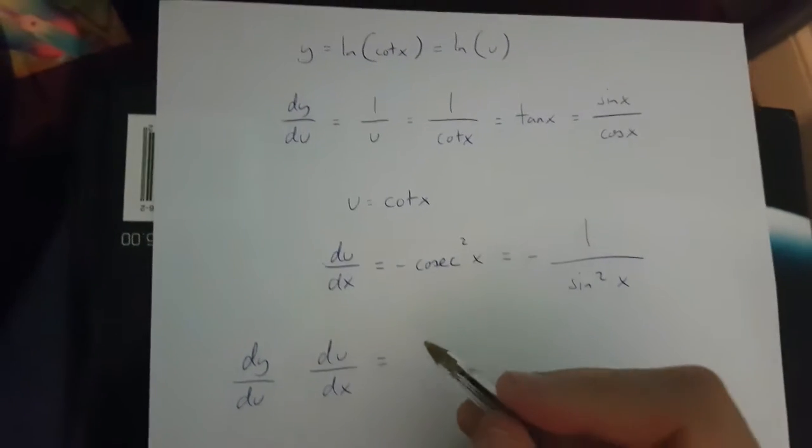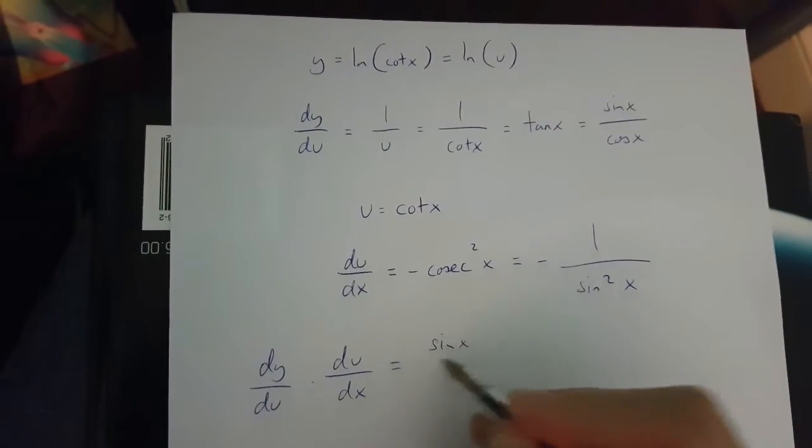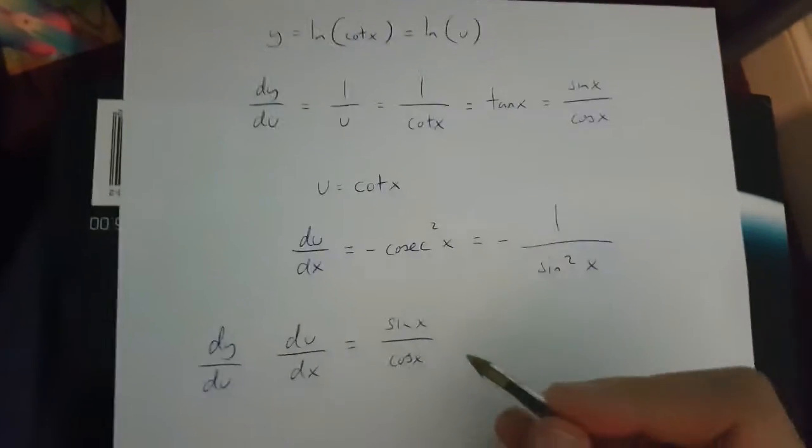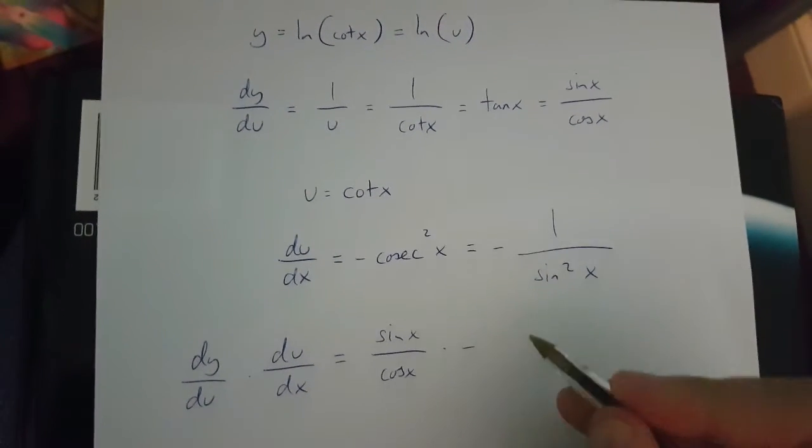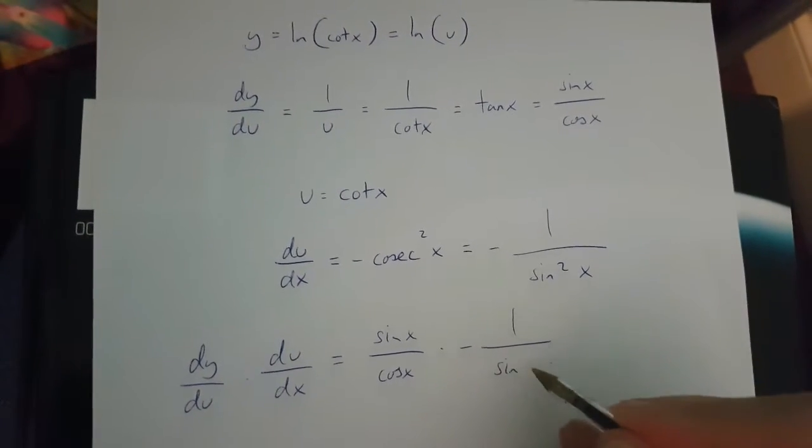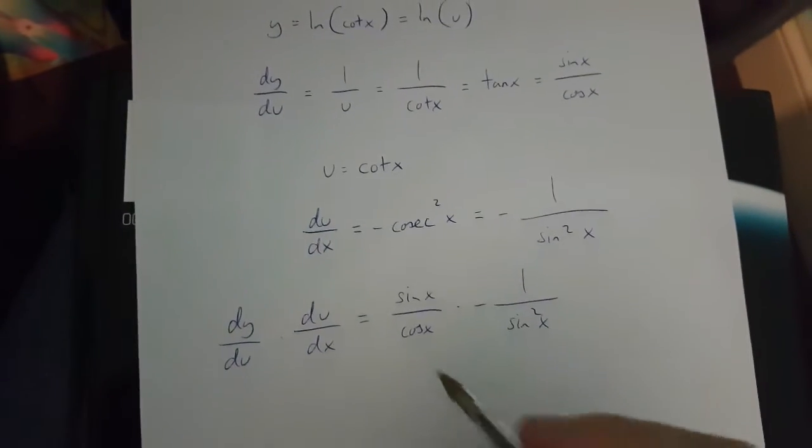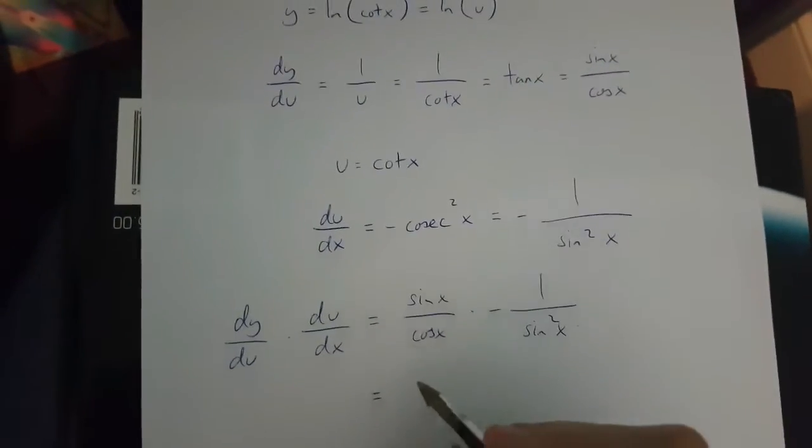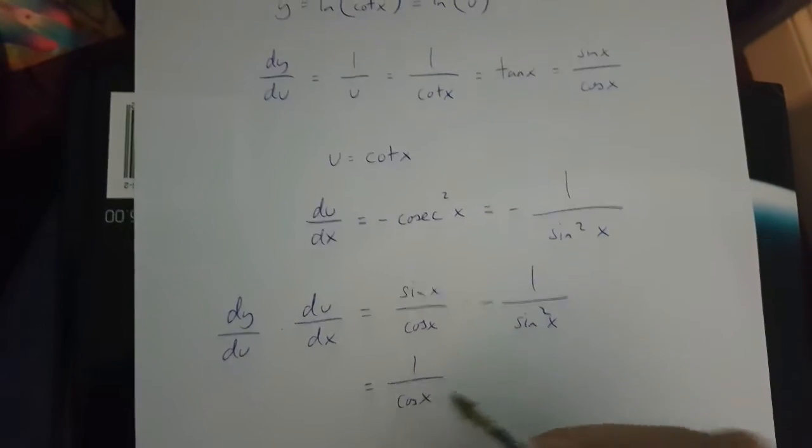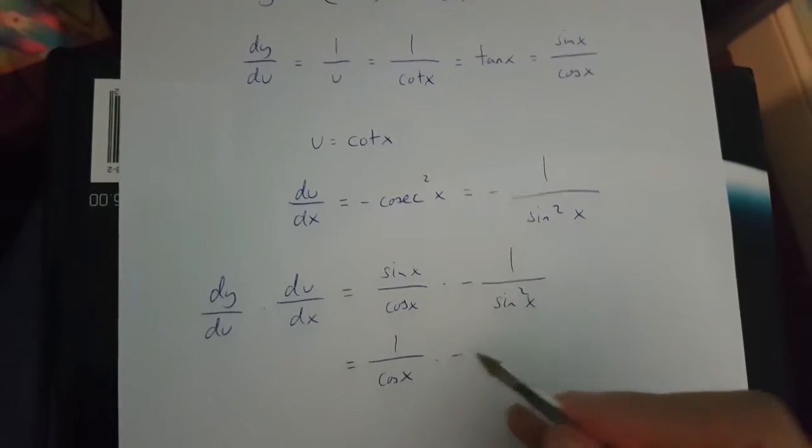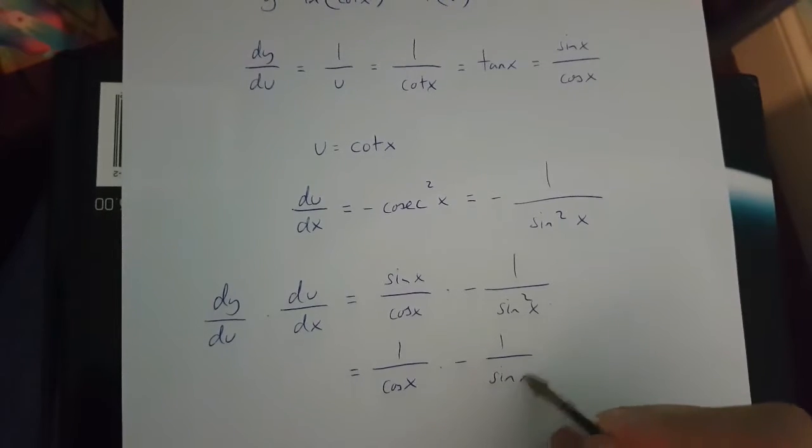And this is going to be equal to sinx over cosx times minus 1 over sinx squared. Now because of this,